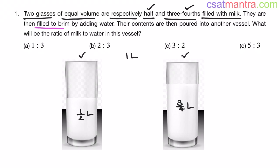Now they are filled to brim by adding water. How much water you can add here? Half liters. How much water you can add here? One by four liters. Now their contents are then poured into another vessel. What will be the ratio of milk to water in this vessel?